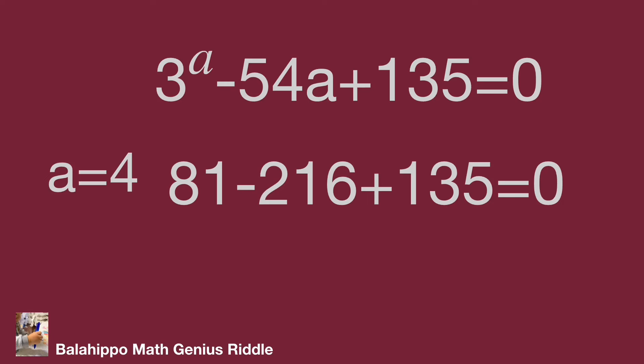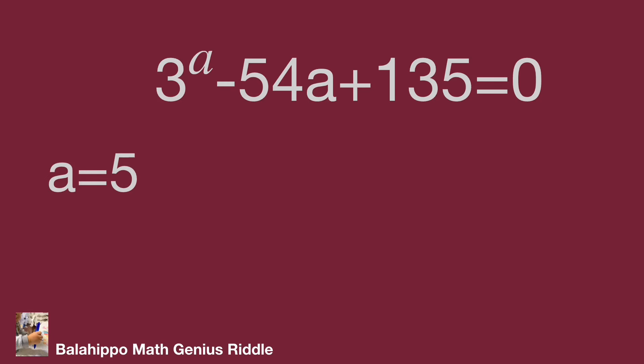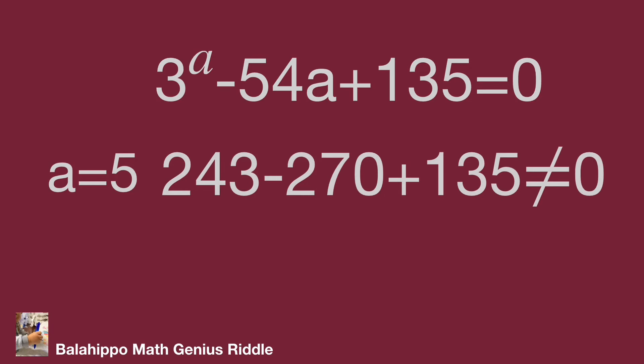A equals 4 is the answer. When a equals 5, same process: 3 power 5 minus 54 times 5 plus 135 equals 243 minus 270 plus 135 not equal to 0. A equals 5 is not the answer.